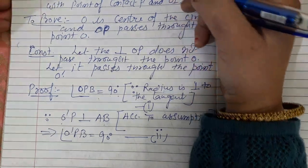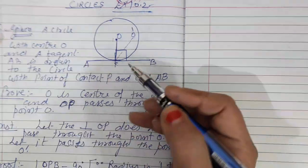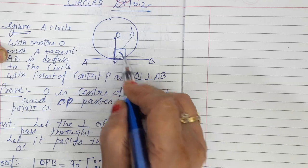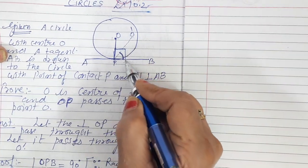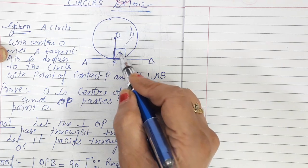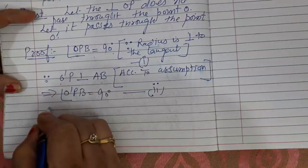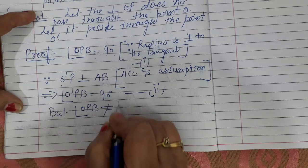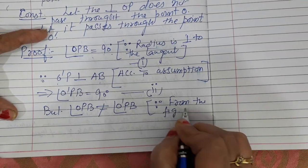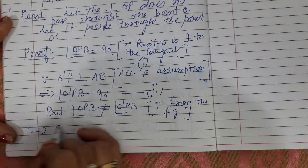Now looking at the figure, according to our statement one angle should be 90°, and according to our assumption another angle is 90°. But from the figure, these two angles are not equal — one is smaller and one is larger. Two different angles cannot both be 90°. Therefore, angle OPB is not equal to angle O'PB, because from the figure they are not equal.